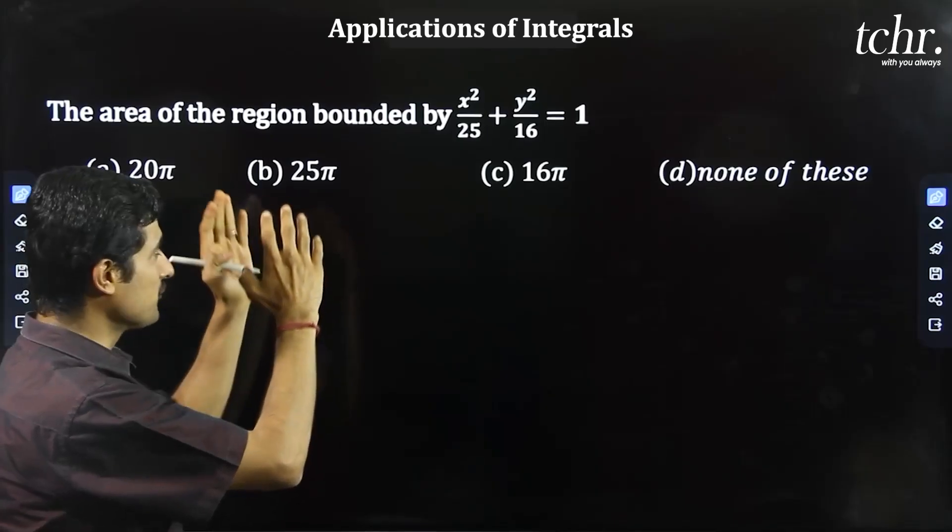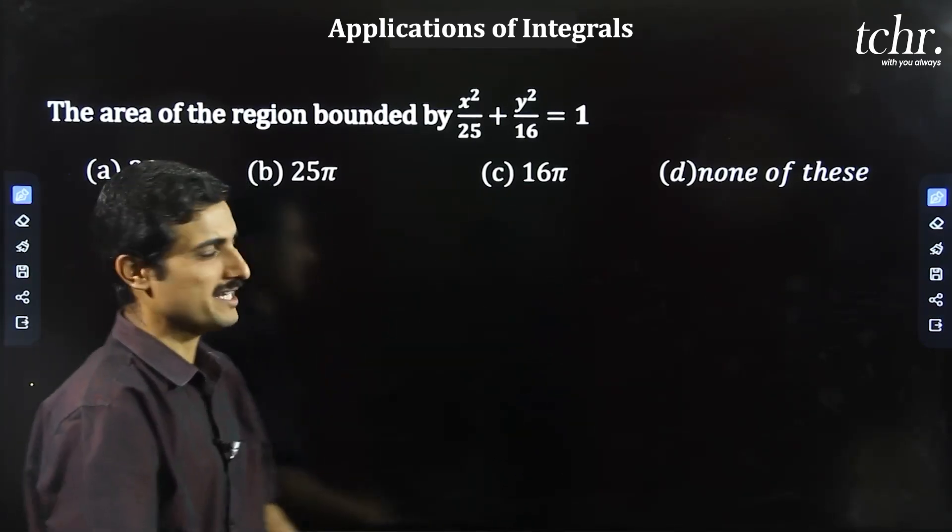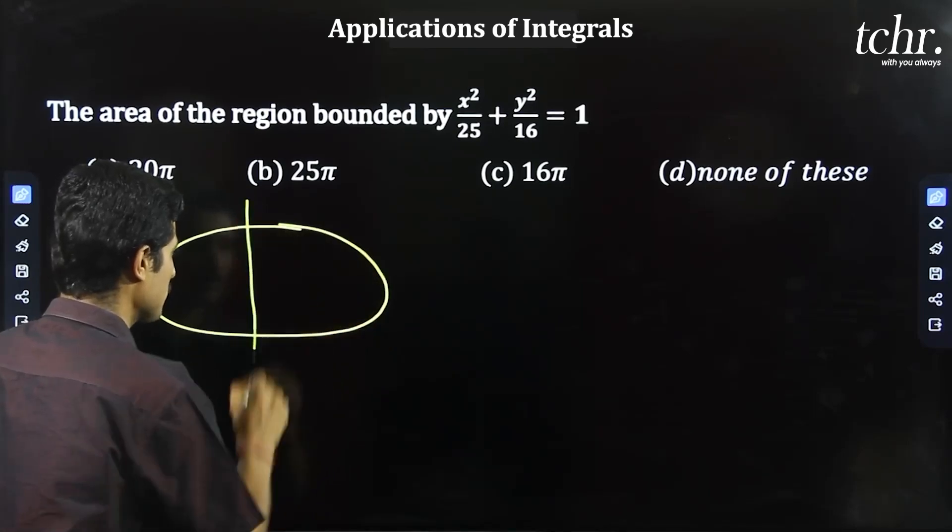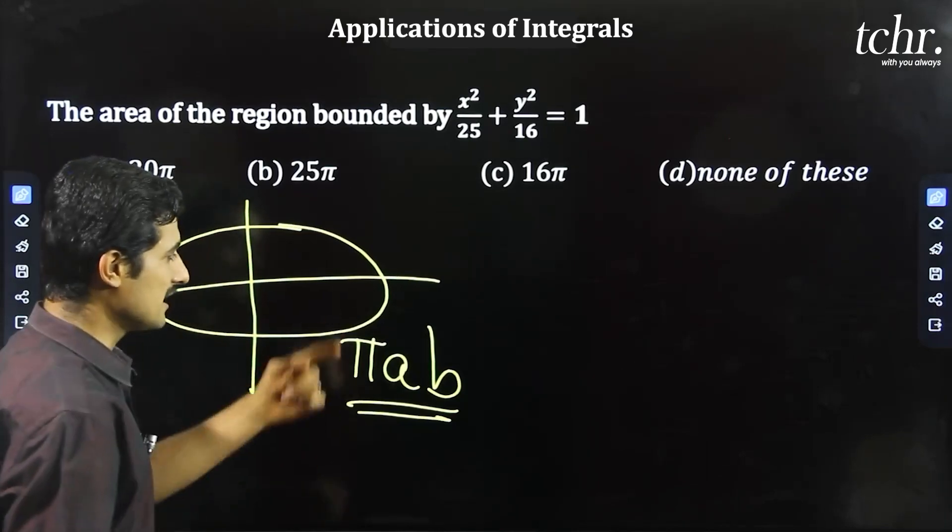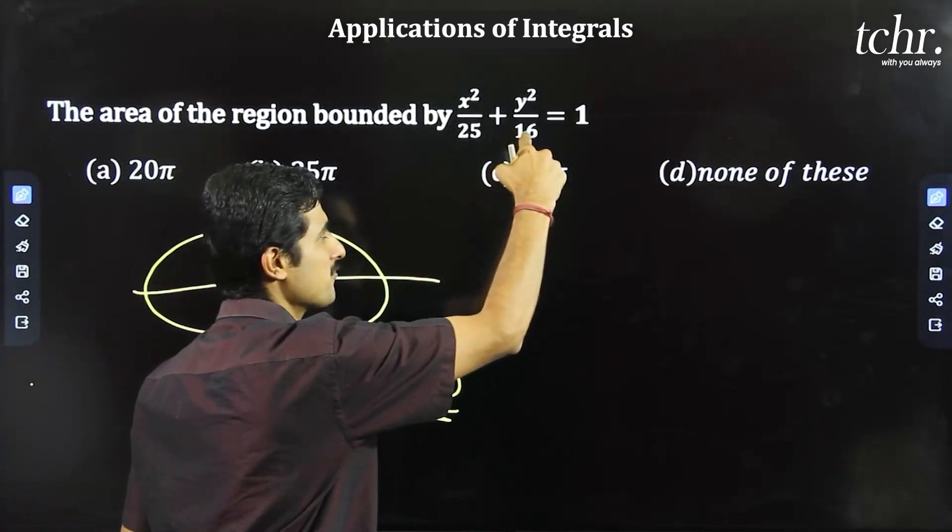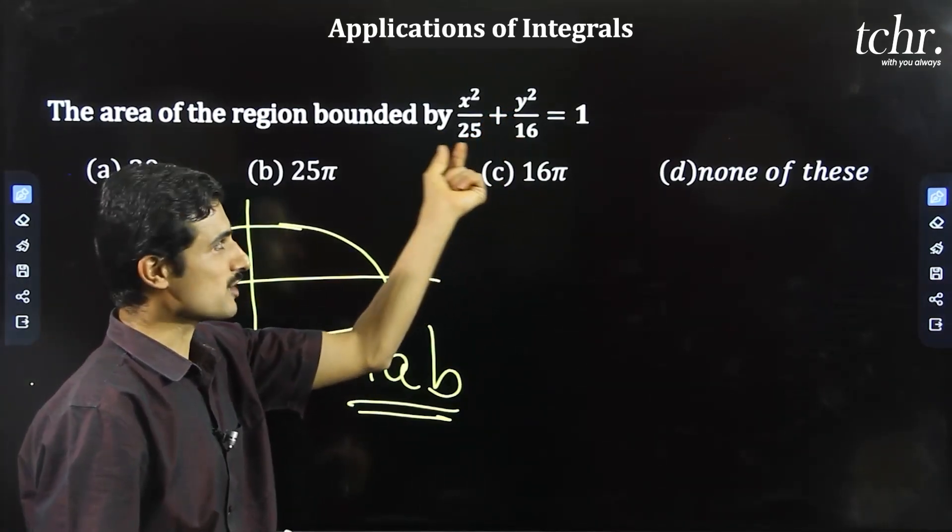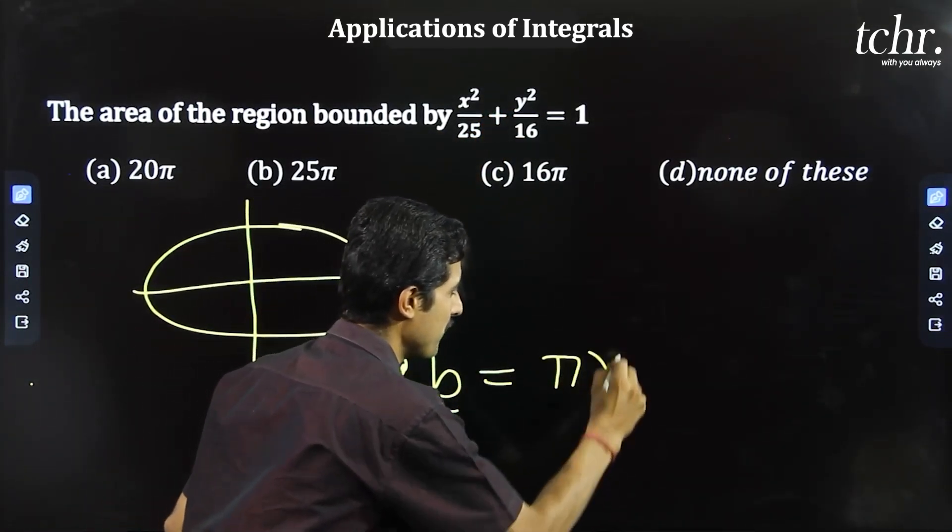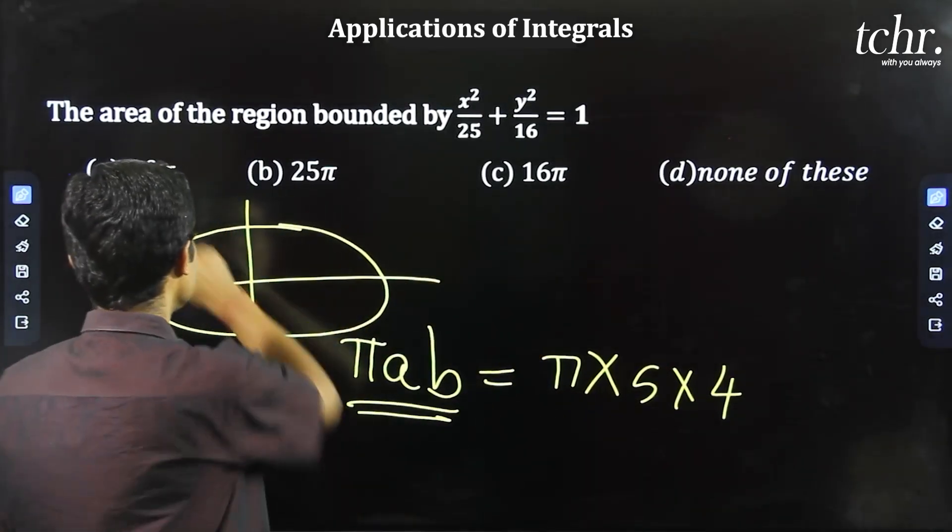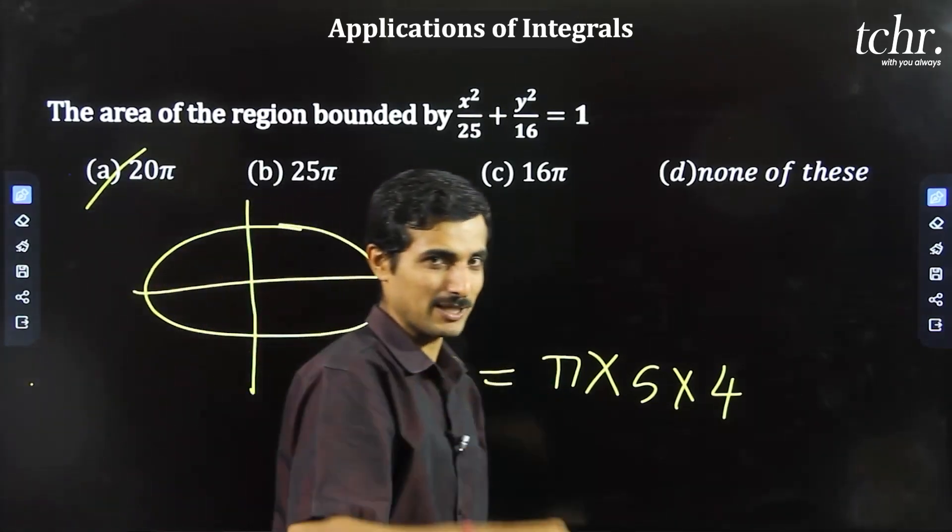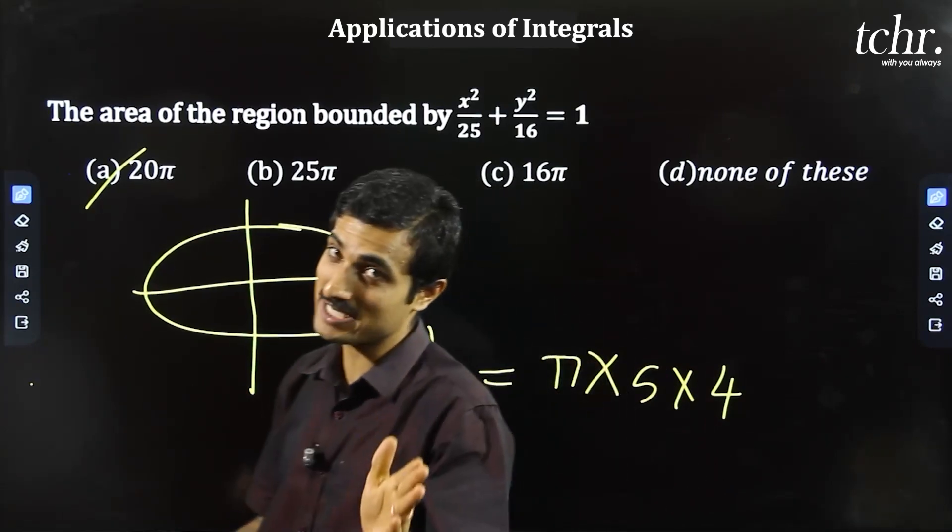Next question: area of the region bounded by ellipse. Ellipse area, how do you find? pi a b is the formula. Here a value 5, b value 4. x square by a square, y square by b square. So here 5, 4, final answer is pi into 5 into 4, 20 pi option a correct answer. So ellipse area is pi a b, circle area is pi r square.